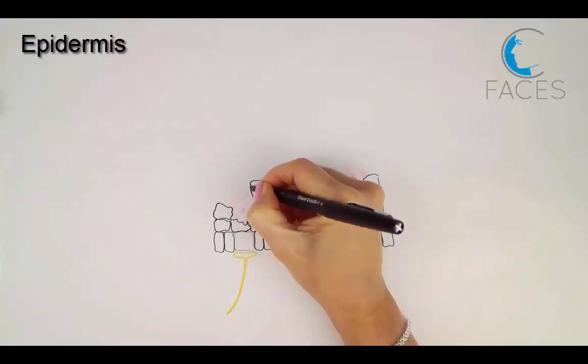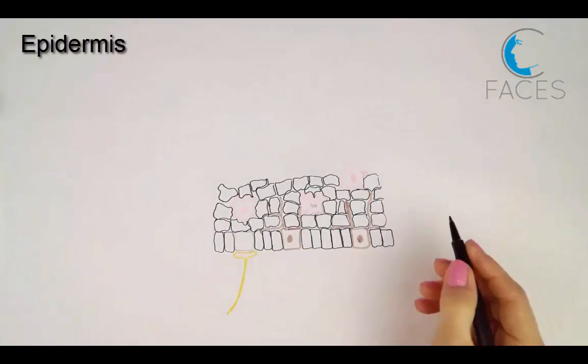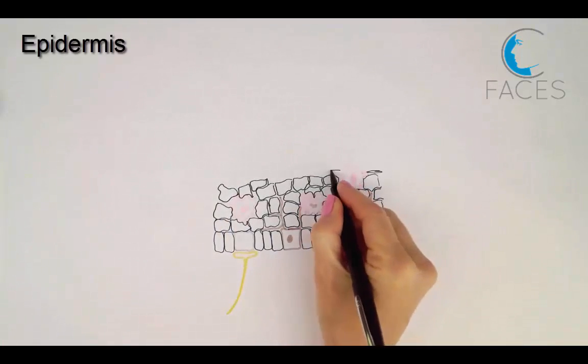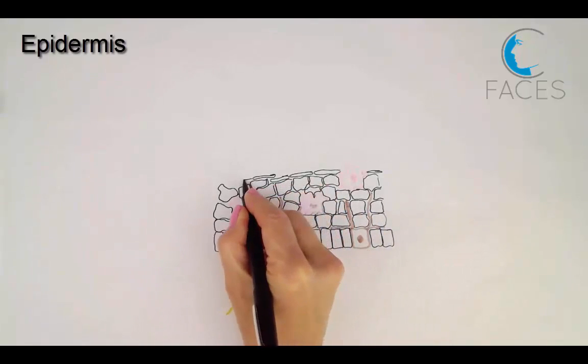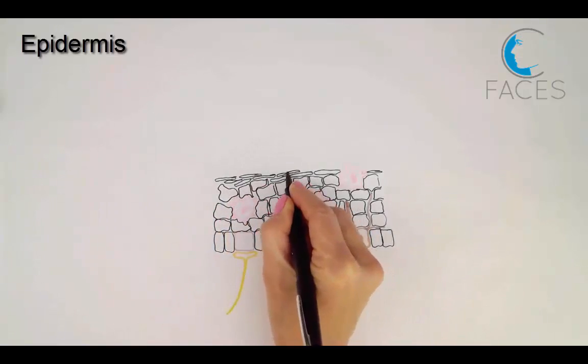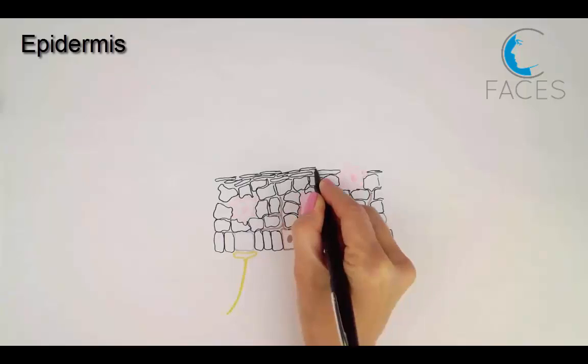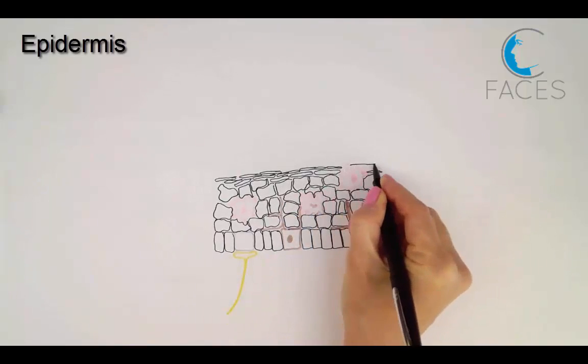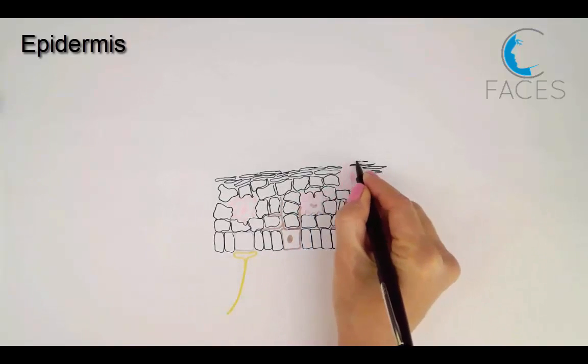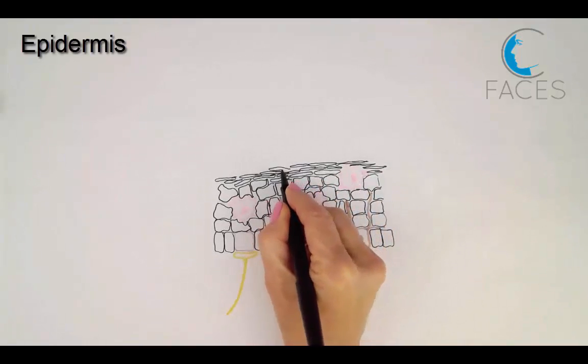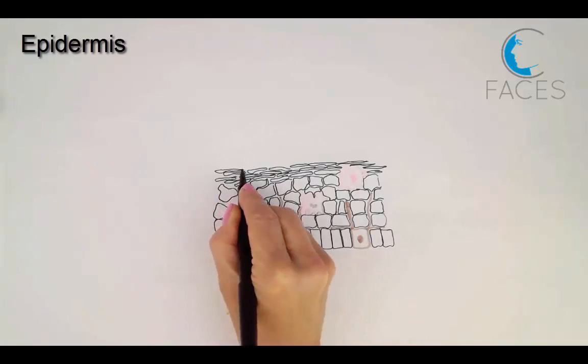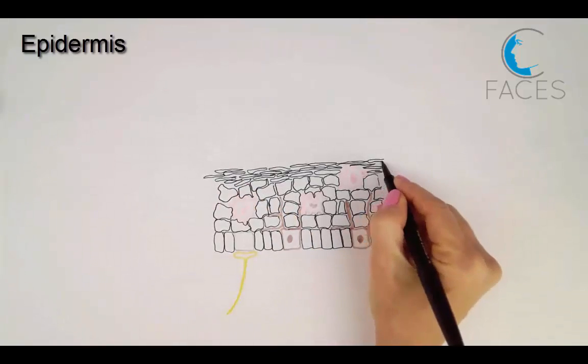The stratum granulosum, or granular layer, has 1-5 layers of flattened cells that are undergoing the final differentiation process of keratinization. During this process, the cells exocytose their lipid-rich contents and produce an impermeable layer around the cells that forms a major part of the skin's barrier against water loss and against foreign matter. The stratum lucidum is only found in thick skin.